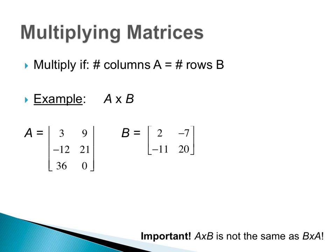You can multiply two matrices if the columns of the first matrix are the same as the number of rows in the second matrix. Here's an example: A multiplied by B. First, write down the dimensions of both. A is three by two — three rows, two columns. B is two by two. These two numbers have to be the same. Because they are the same, yes, it is possible.